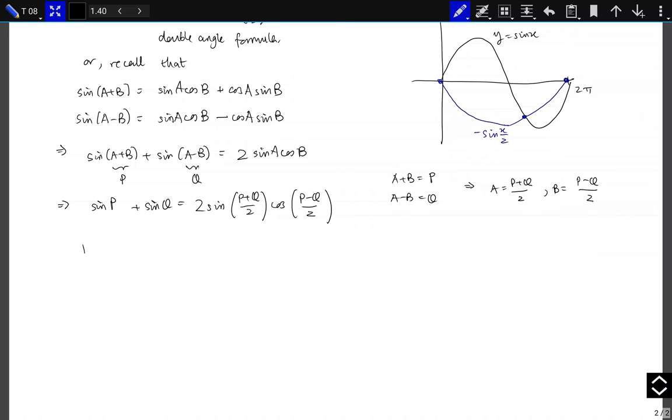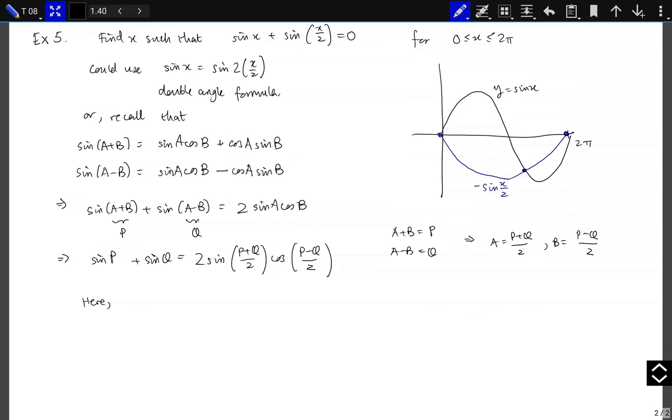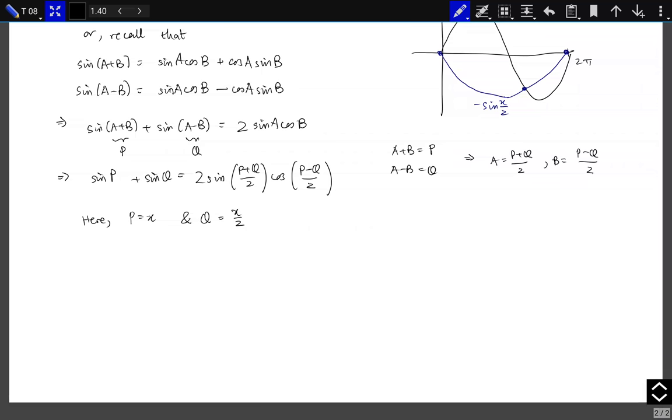So here, as promised, we wanted sin x + sin(x/2). So that says that p is equal to x, and q is equal to x/2. You can pick the other way around if you like. It's symmetric in p and q. Just adding the 2 divided by 2, I get 3x/2 divided by 2 for 3x/4. And taking the difference divided by 2, I get x/4. So our original equation had that this is equal to 0.